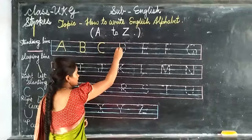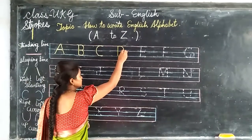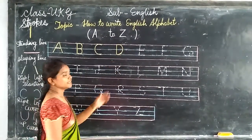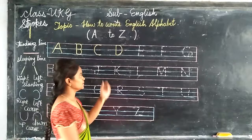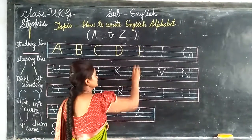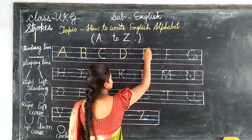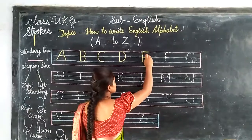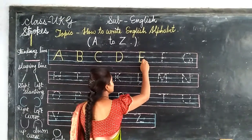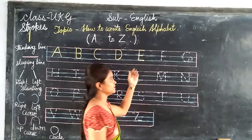Standing line, left big curve. D. Standing line, slipping line, slipping line, and another slipping line. E.